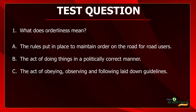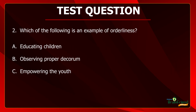Let's take two questions to test our knowledge. Question 1: What does orderliness mean? The correct answer is C — the act of obeying, observing, and following laid down guidelines. Question 2: Which of the following is an example of orderliness? A. Educating children. B. Observing proper decorum. C. Empowering the youth. The correct answer is B — observing proper decorum.